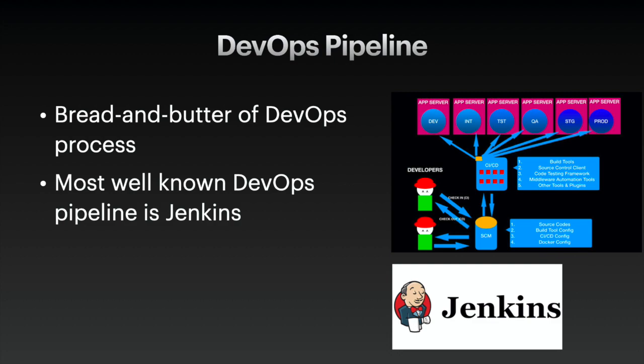DevOps pipeline is the bread and butter of the DevOps process. Probably the most well-known DevOps pipeline that kicked off the DevOps trend is Jenkins, which is an open-source tool built in the Java programming language. Now we have so many DevOps pipeline tools like Argo, Harness, GitHub Actions, and Travis CI.